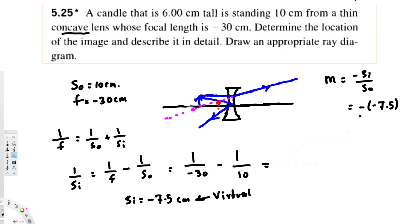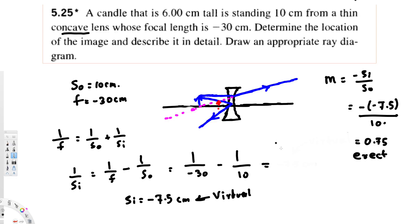So 7.5 divided by the object distance of 10 centimeters gives us a magnification of 0.75. Since we are getting a positive answer for the magnification, this image is going to be upright — or erect; both words mean the same thing.